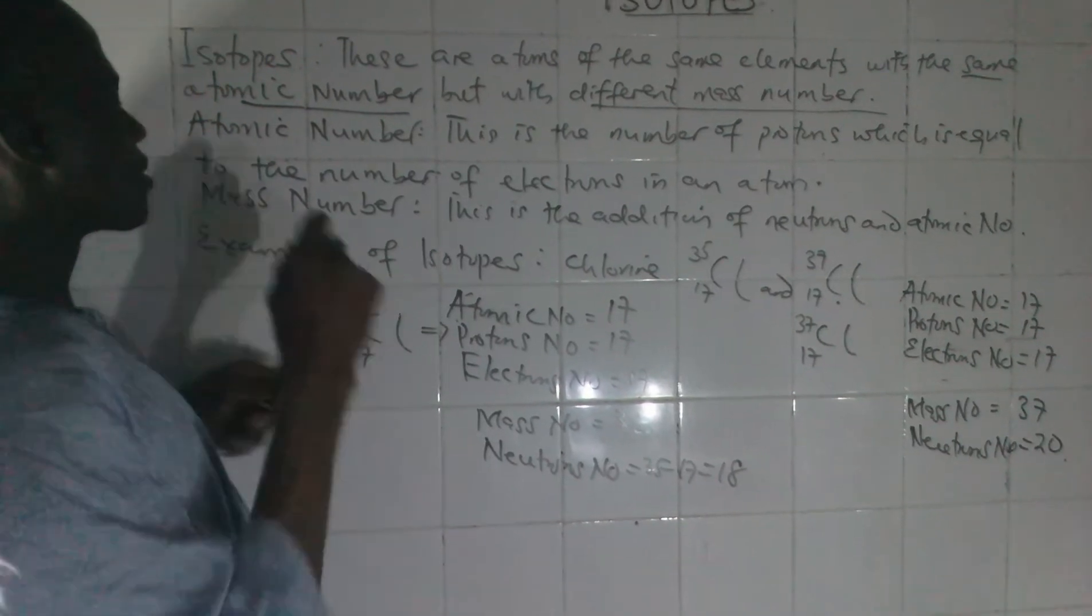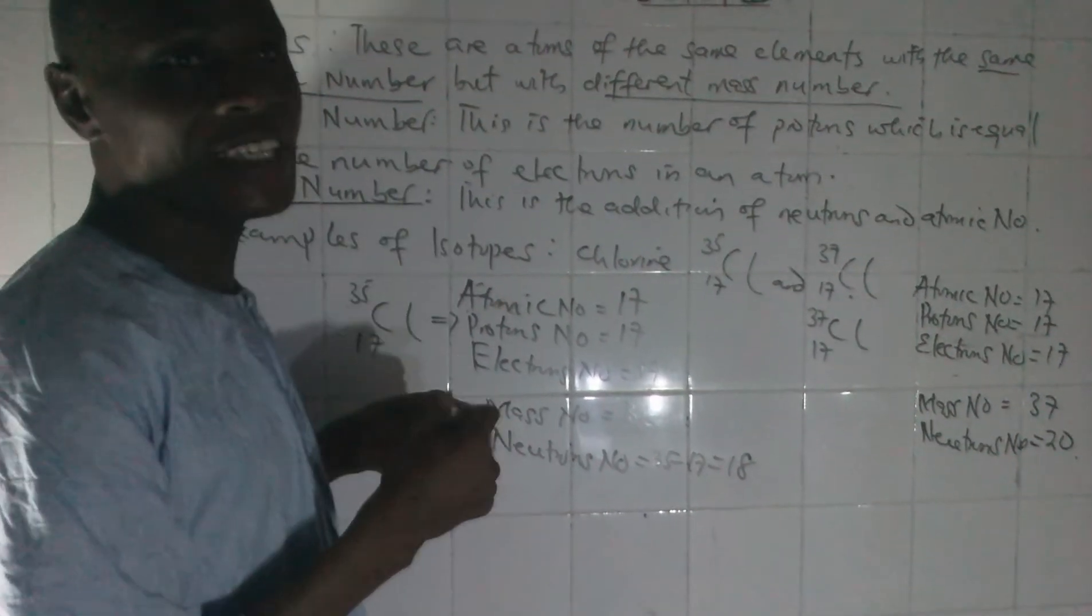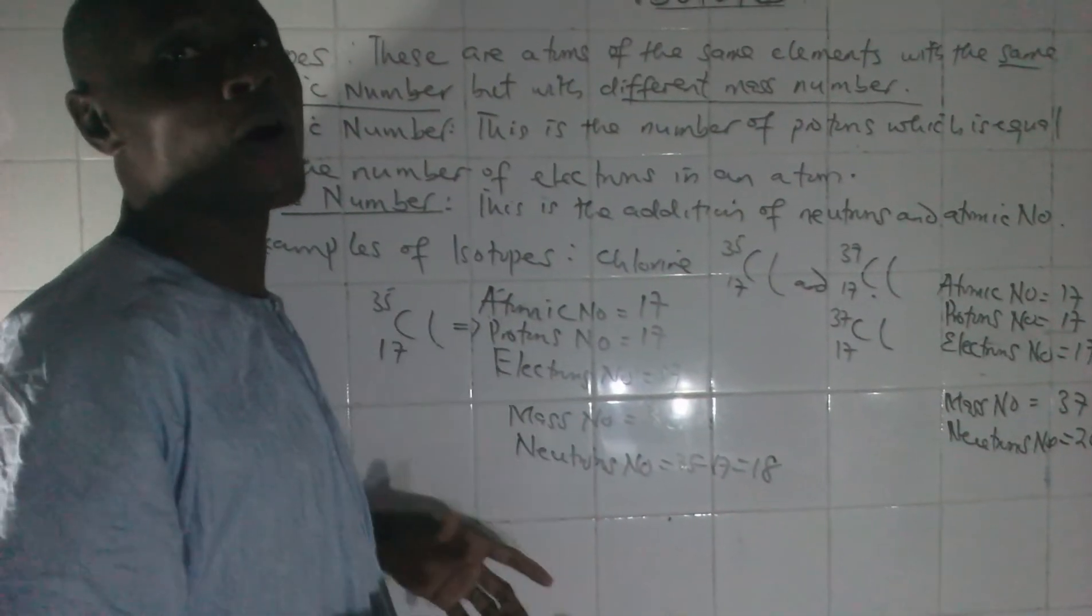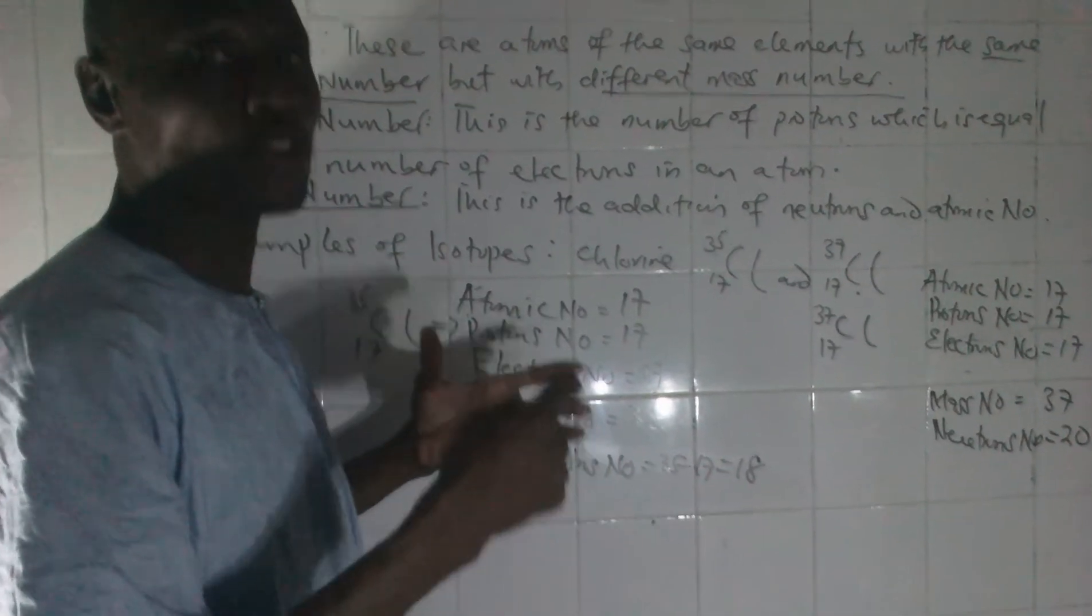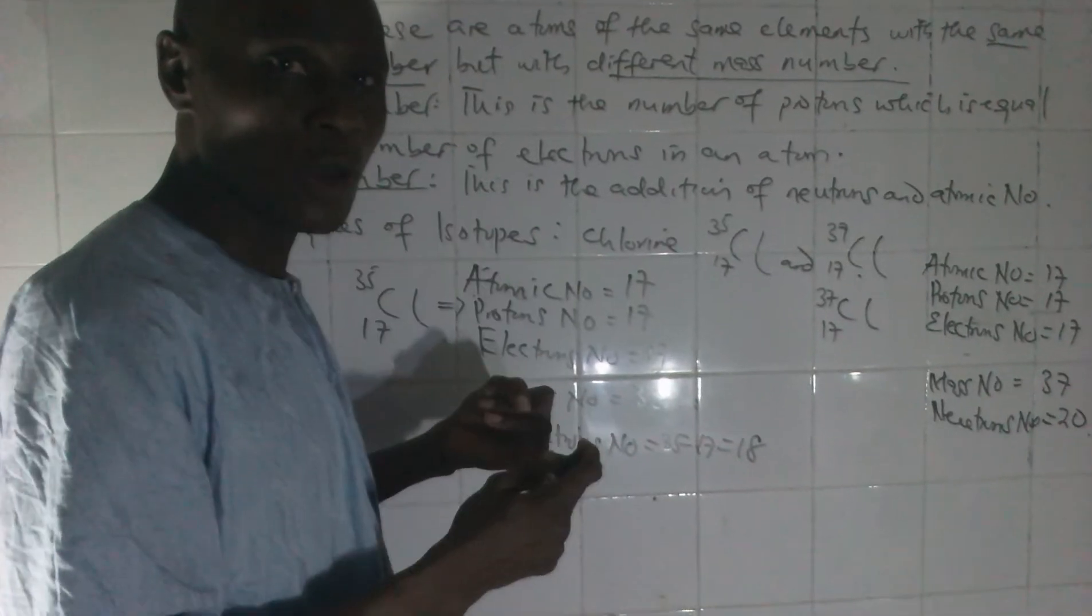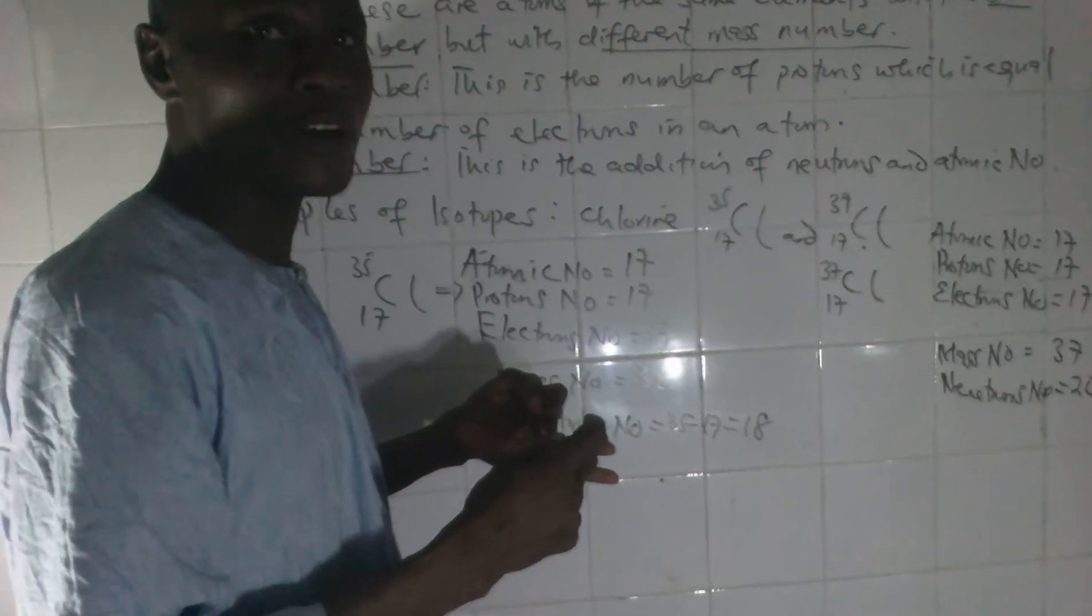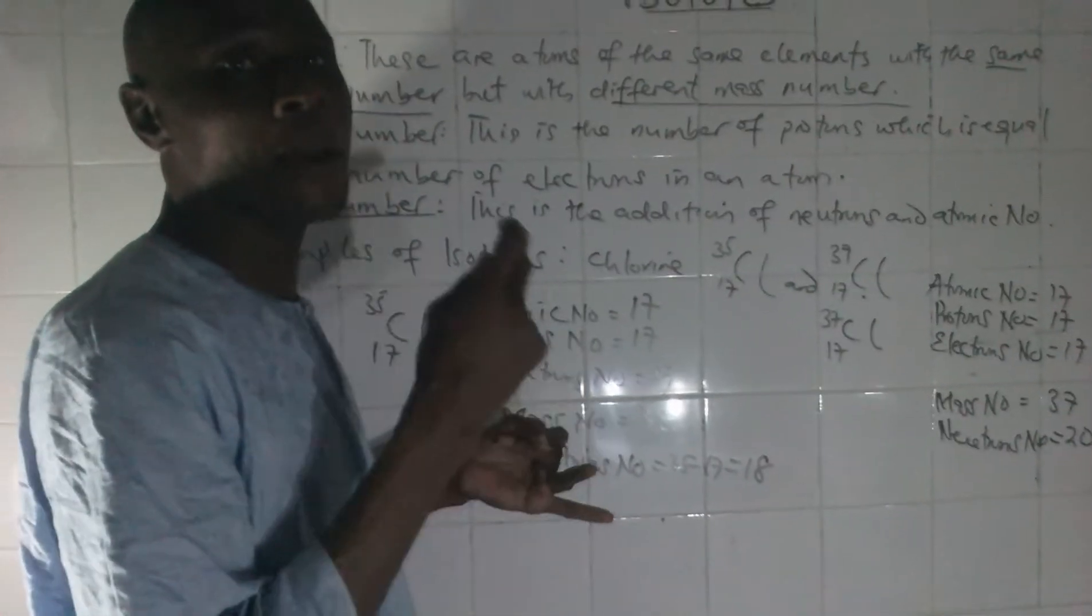We then have mass number. What is mass number? Mass number is an addition of the number of neutrons and number of protons or atomic number. When you add atomic number with the number of neutrons, it gives us the mass number.